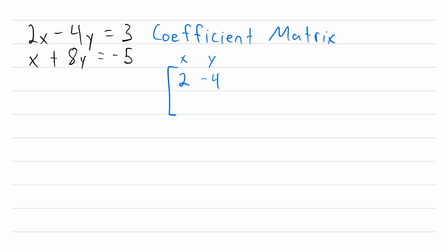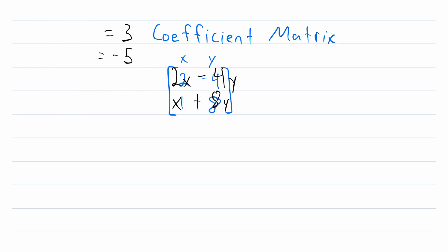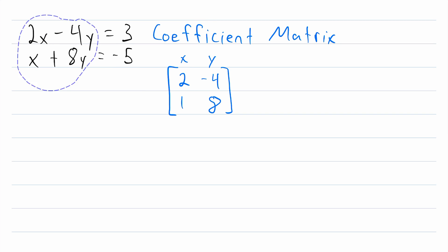Then in the second row, first column, we've got the coefficient of x in the second equation, which is 1. And then in the second row, second column, we will have the coefficient of y in the second equation, which is 8. And that is our coefficient matrix for this system. You can see it's just like taking the coefficients and putting them directly into a matrix.